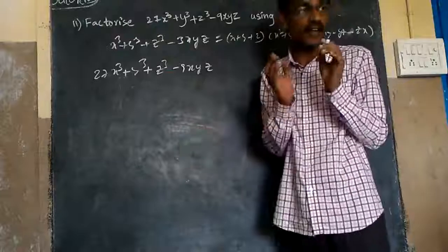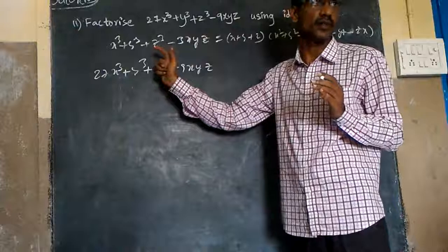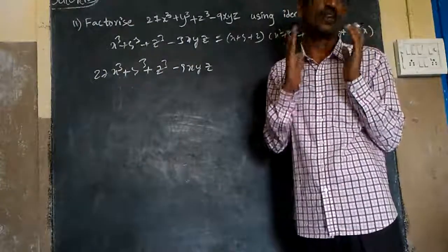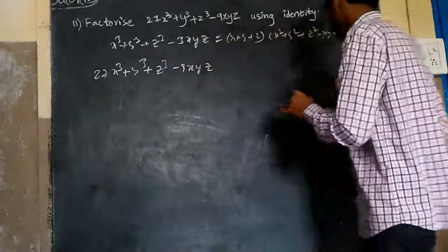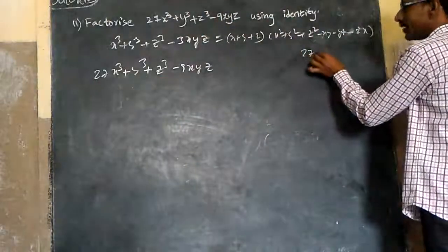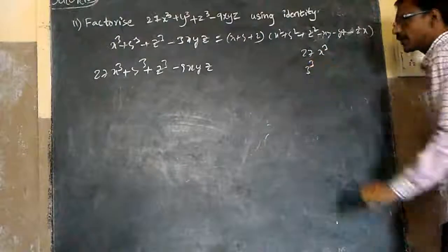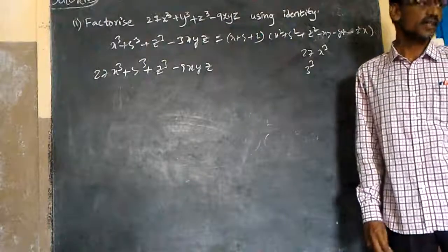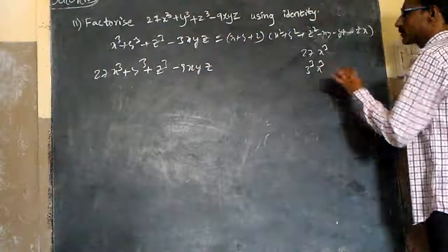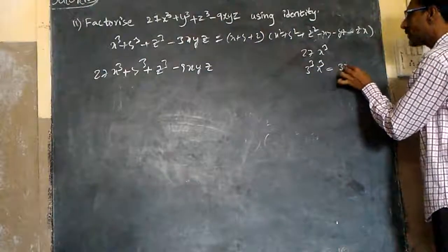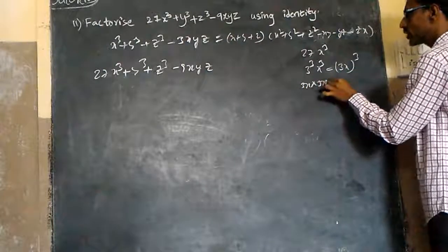From this, I will identify x, y, and z. To do that, I will take twenty-seven x cube first. We can write this as three cube into x cube, which is also written as three x whole cube, or three x into three x into three x.